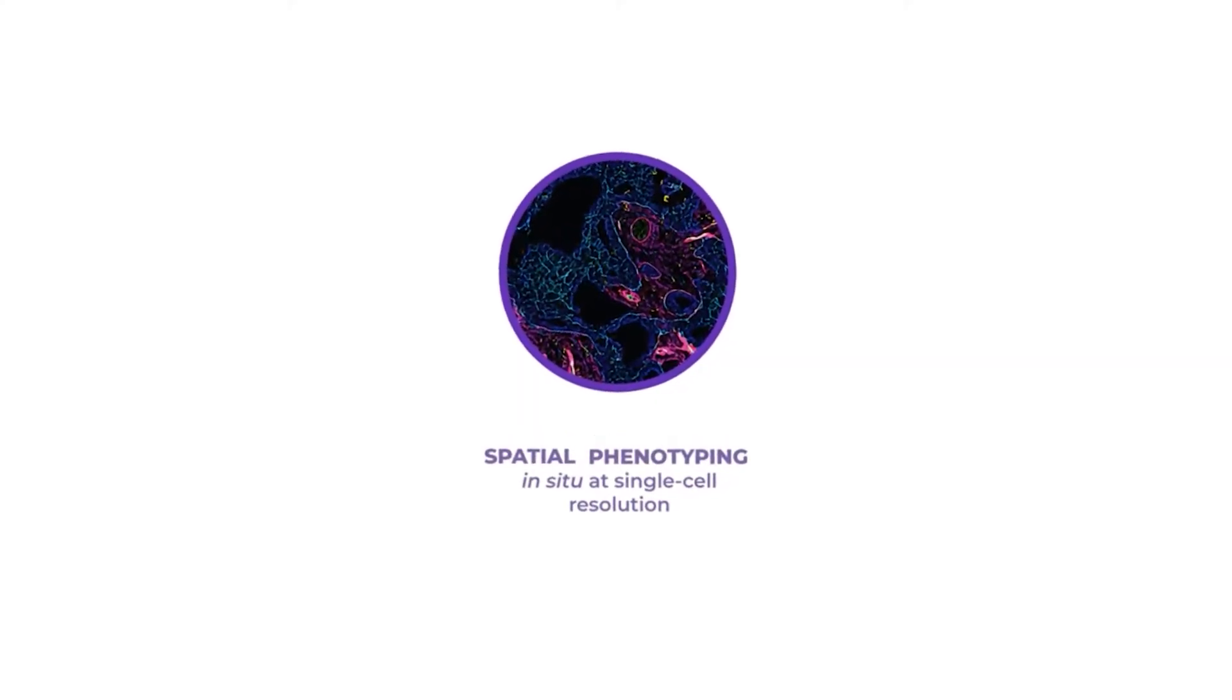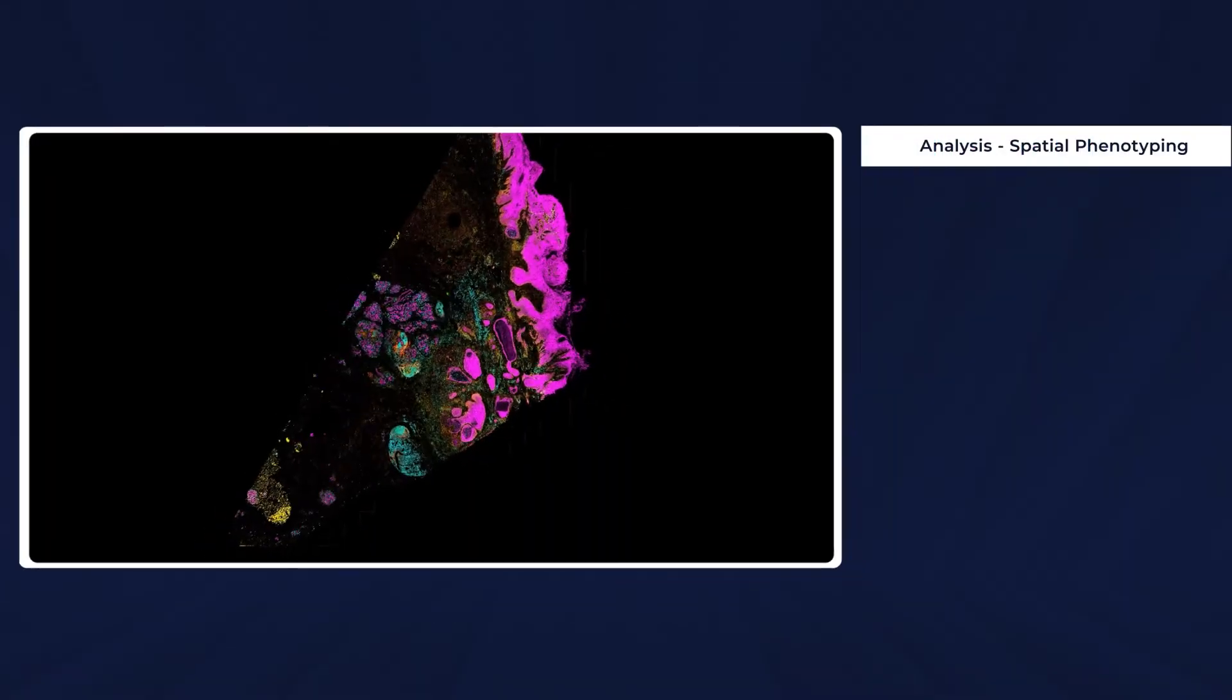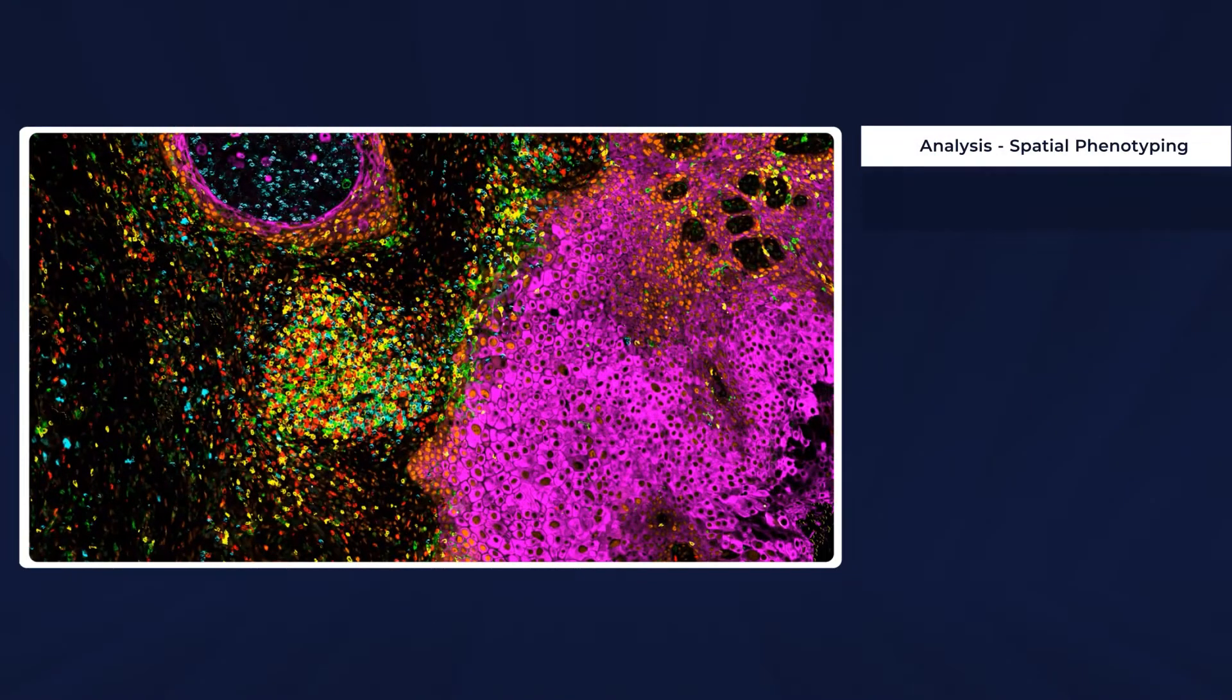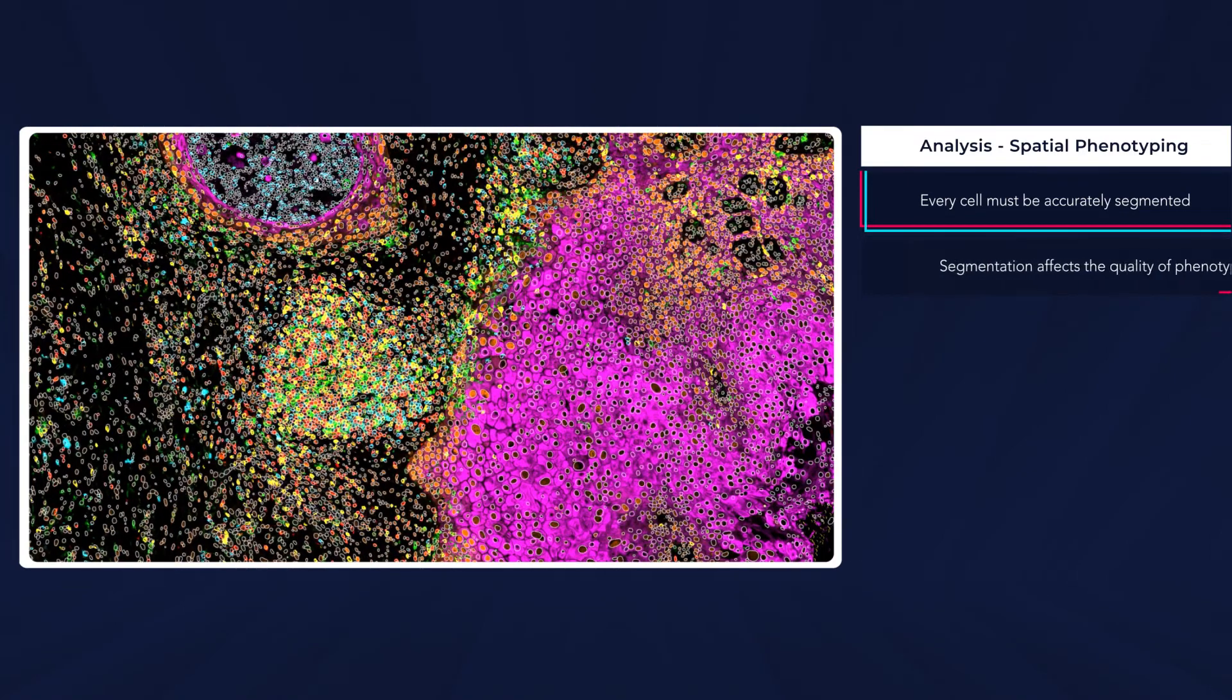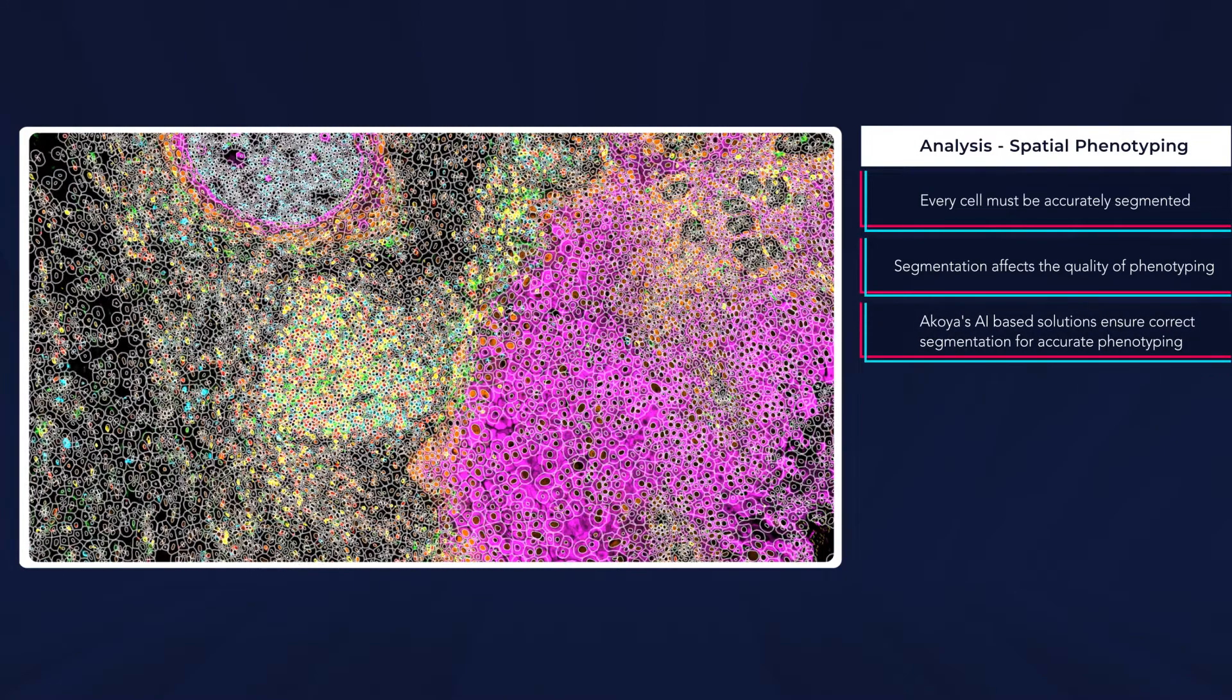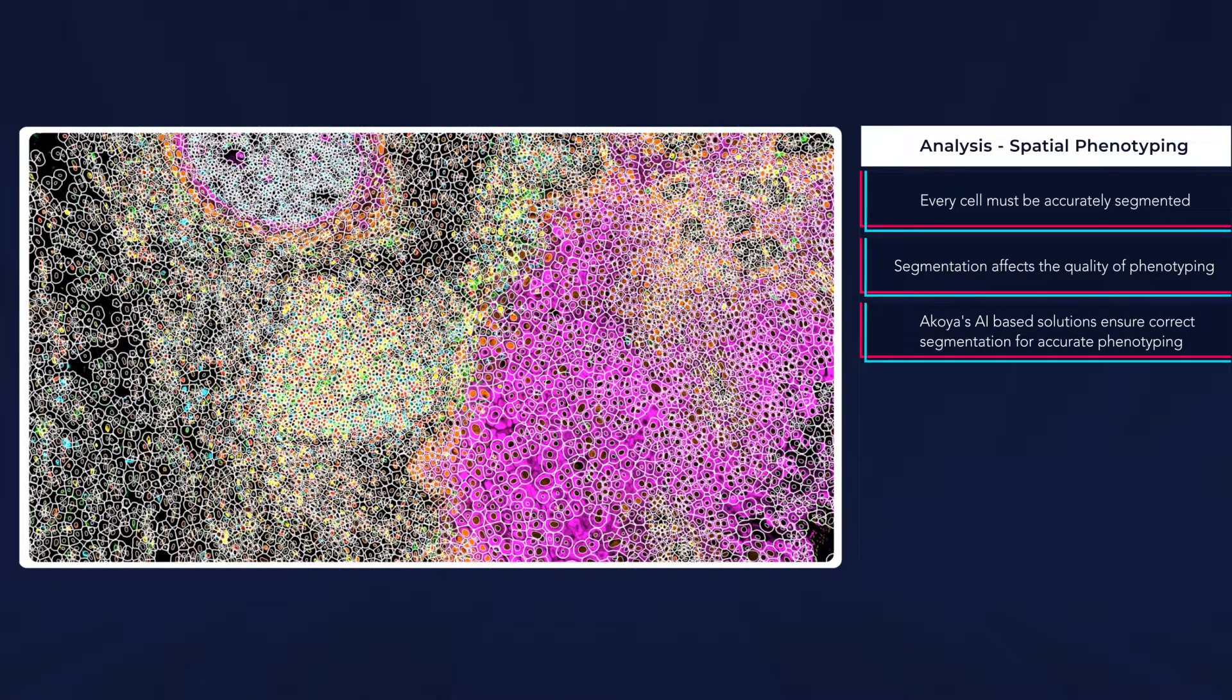Once uploaded, every cell within the tissue must be accurately segmented. An essential step for phenotyping requires accuracy and precision and directly impacts the quality of phenotyping. To avoid the challenges of cell segmentation, Akoya offers AI-based solutions that map out each cellular boundary across an entire tissue section.